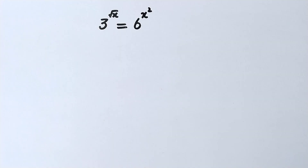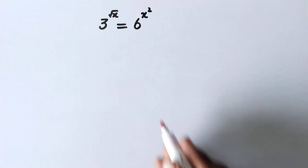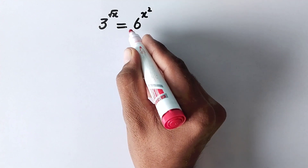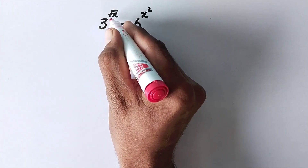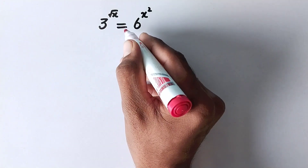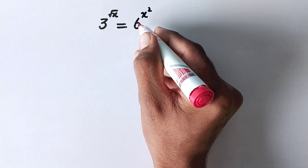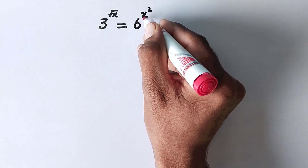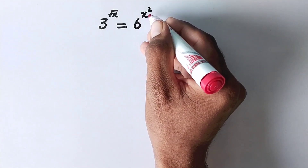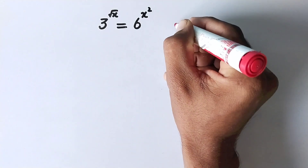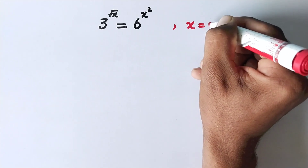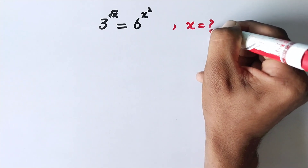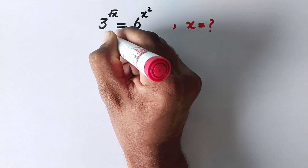Hello everyone and welcome to Explode Maths. Today we have to solve the problem: 3 raised to the power square root of x is equal to 6 raised to the power x squared. We have to find the value of x. Let us see the solution.